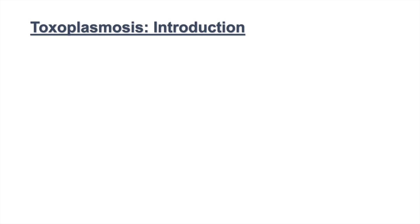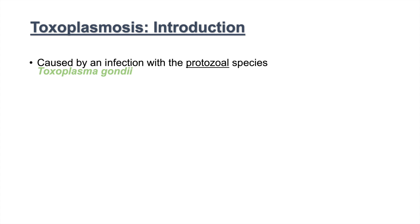In this lesson we're going to talk about toxoplasmosis. Toxoplasmosis is caused by an infection with the protozoal species known as Toxoplasma gondii. It is a protozoal species that causes the infection, and it is an obligate intracellular parasite.